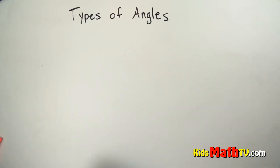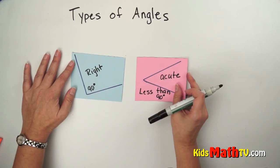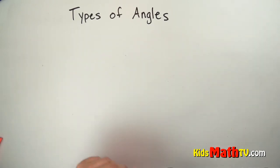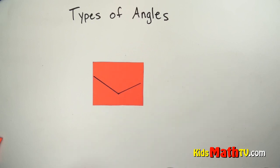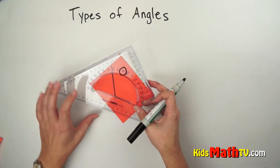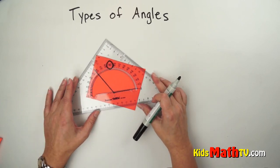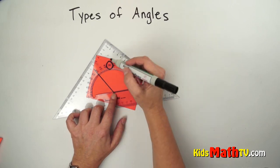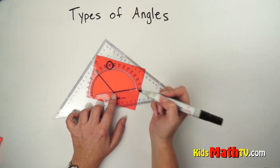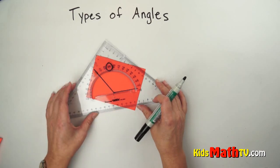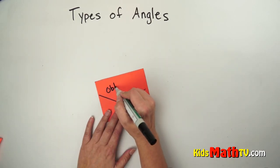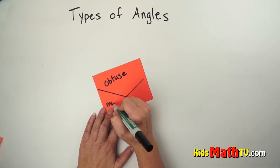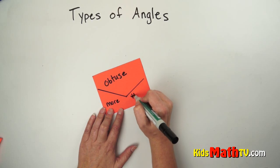So we have so far a right angle which is 90 degrees exactly and an acute angle which is less than 90 degrees, and that leaves us with an angle that is more than 90 degrees. An angle that is more than 90 degrees we call an obtuse angle. If I line up here you can see 90 degrees here, and this angle is larger than 90 degrees — so we call this an obtuse angle, greater than 90 degrees.